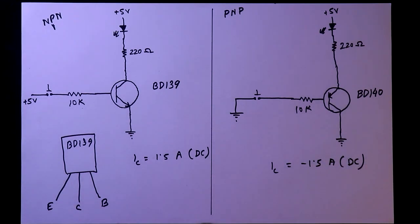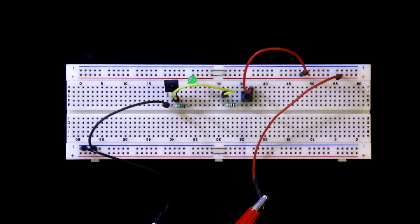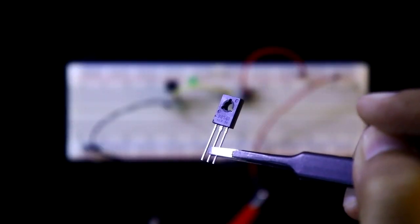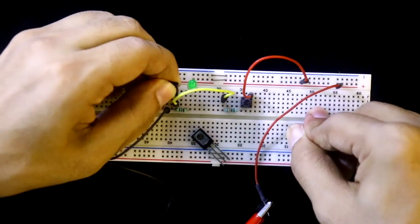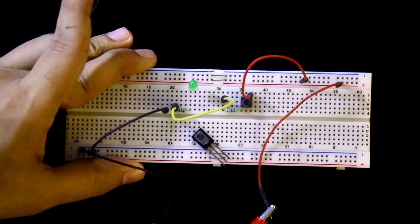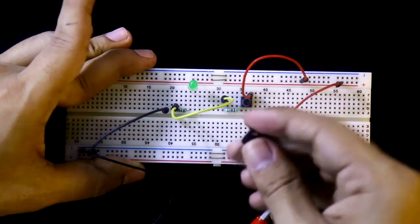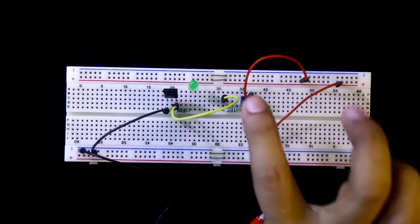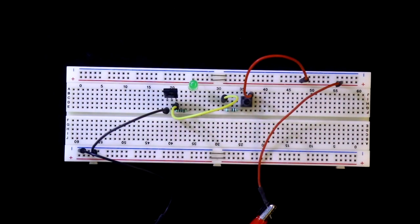Now see this on the breadboard. This is the previous circuit. And connecting this. Now if I press this switch, this LED will not glow because it is PNP.